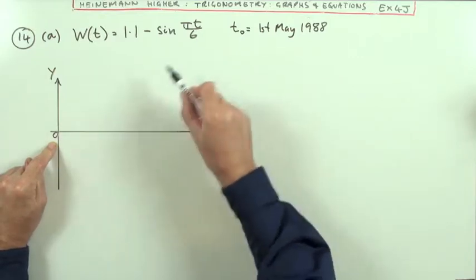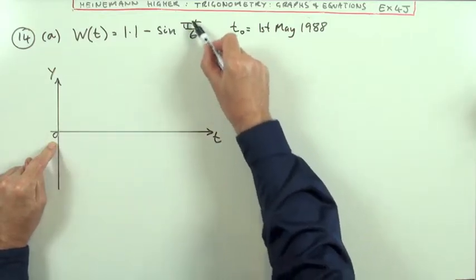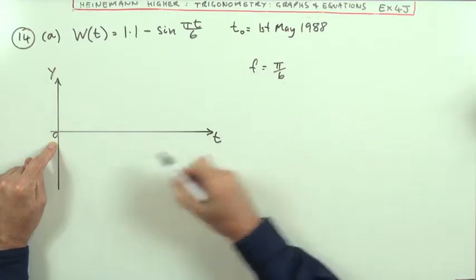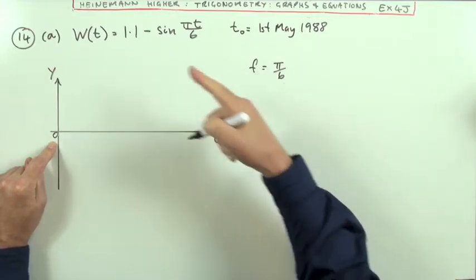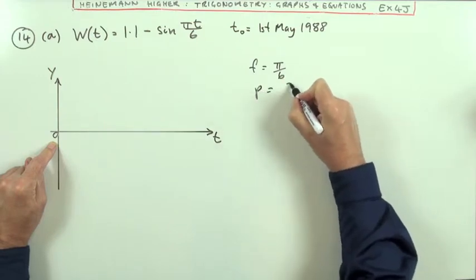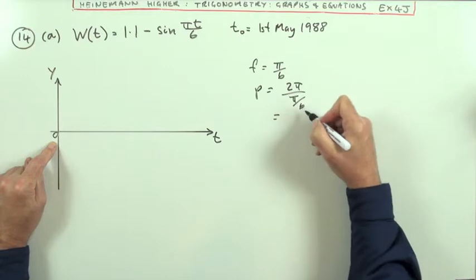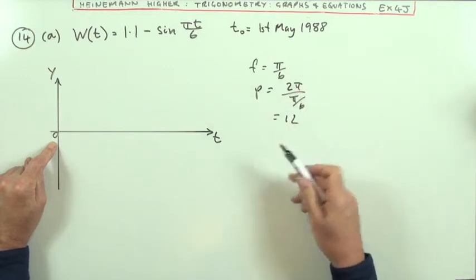So how long is the sine going to take to repeat itself? Well, here you can see the frequency. The frequency of that graph is pi upon 6. Now, the normal period is 2pi, so its period should be 2pi divided by that number, pi upon 6. Pi is cancelled, 6 on top, which is 12, which is just what you'd expect.